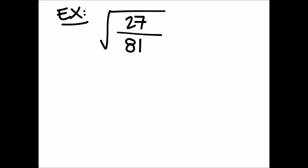So first thing we do is we separate these two things. We go square root of 27, and then we go square root of 81.